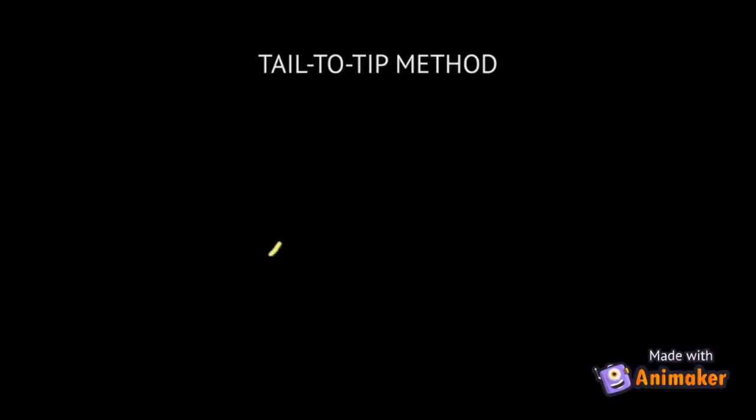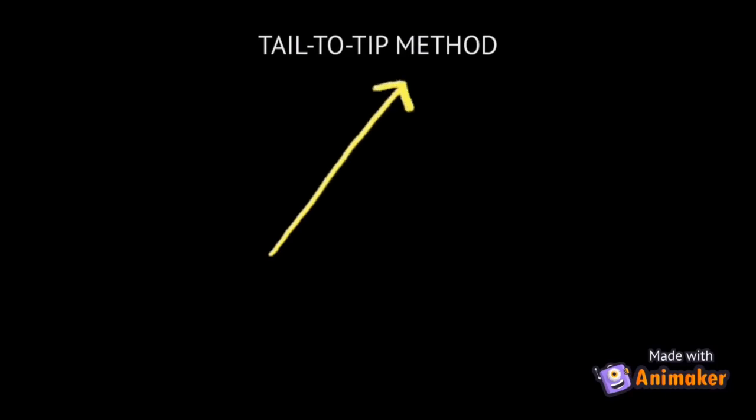Just to recap from our previous lesson, we know that vectors can be added graphically using the tail-to-tip method, where the first vector is drawn first, and the following vectors are drawn connecting their tail to the tip of the previous one. The resultant is drawn from the tail of the first vector to the tip of the last one.